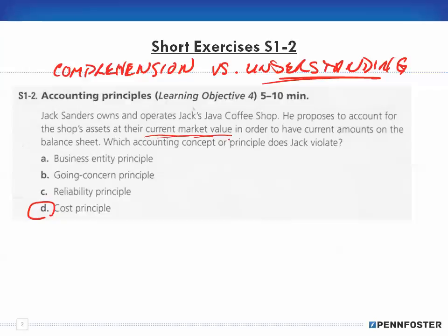He proposes to account for the shop's assets — what the business owns — at current market value. Well, what is the current market value? That is a cost — it's what you would buy it for. In order to have current amounts on the balance sheet, which accounting concept or principle does Jack violate? It's not the business entity principle — that relates to whether it's a sole proprietorship, corporation, or limited liability company, which has nothing to do with how things are reported on the balance sheet.